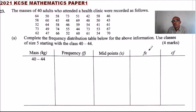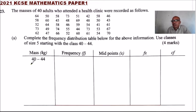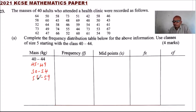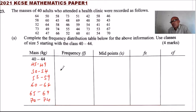If you are able to fill this frequency distribution table you will get four marks. We write the classes here: 45 to 49, 50 to 54, 55 to 59, 60 to 64, 65 to 69, and finally 70 to 74. Those are the classes.